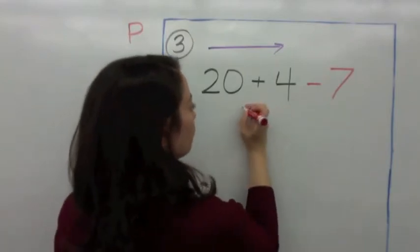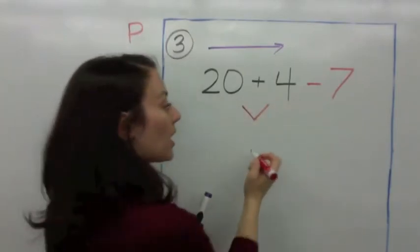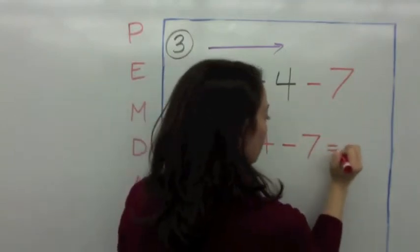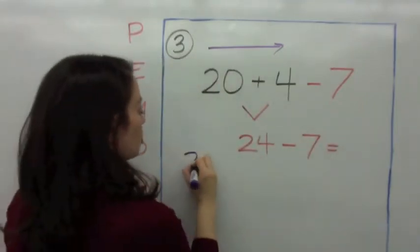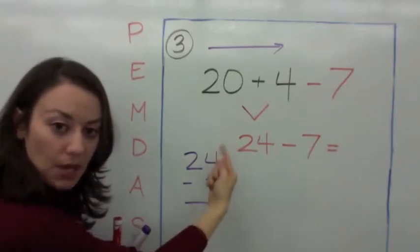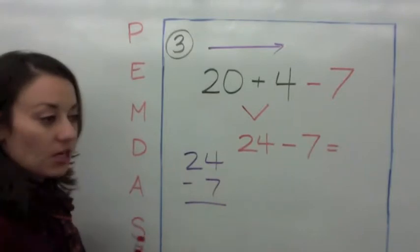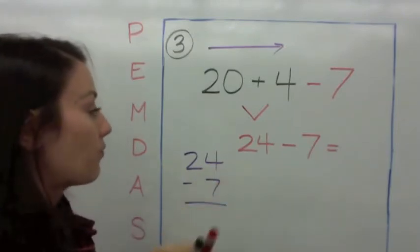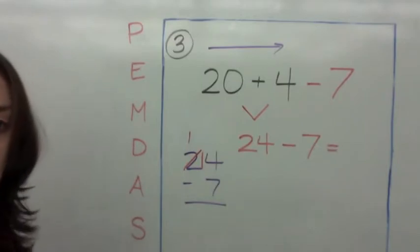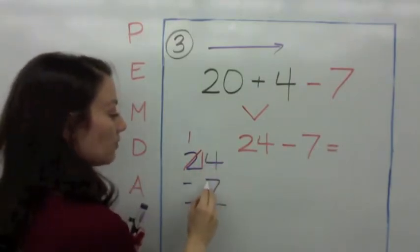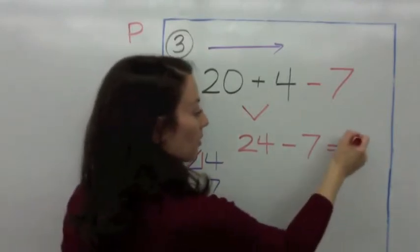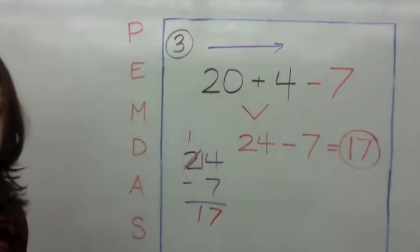So we start with 20 plus 4 because addition comes first. Make a V: 20 plus 4 is 24. Then bring down minus 7. Now solve 24 take away 7. Look at the ones place: 7 is bigger than 4, so go next door, borrow 10, making 14. Fourteen take away 7 is 7, and bring down the 1. The answer is 17.